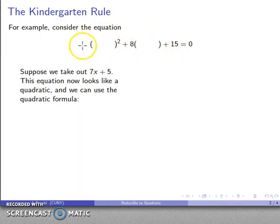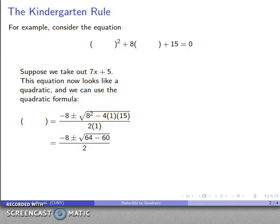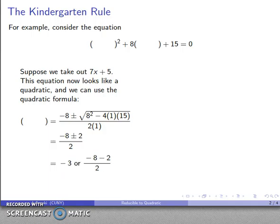What we notice now is this looks like a quadratic equation — something squared plus 8 times something plus 15. The quadratic formula works very nicely to solve equations like that. So I have a = 1, b = 8, c = 15, and I can drop those into the quadratic formula. After the arithmetic settles, I get two solutions: negative 8 plus 2 over 2, which is negative 6 over 2, giving negative 3; or negative 8 minus 2 over 2, giving negative 5.